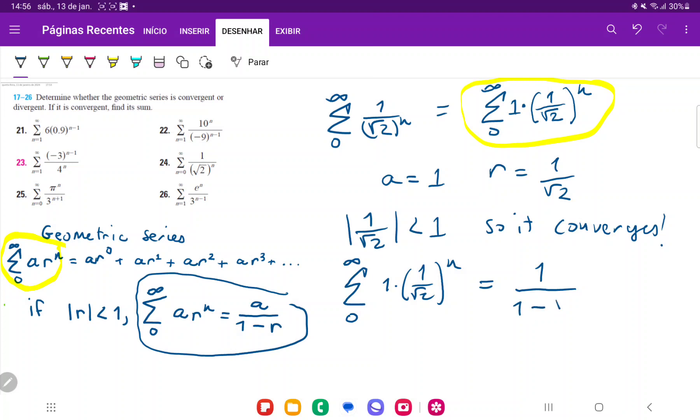So 1 minus square root of, I mean, 1 minus 1 over square root of 2. So let's just simplify this a little bit.